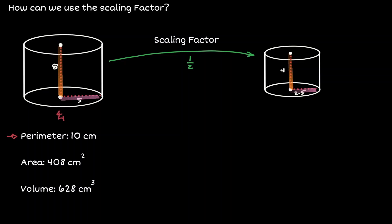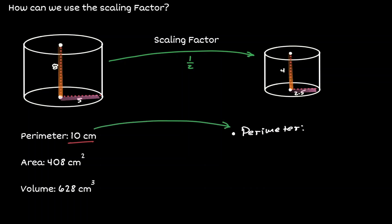Let's say we know that the perimeter of the cylinder on the left has a value of 10 centimeters. Just knowing the scale factor, can we find the perimeter of the cylinder on the right? We can — if we take the perimeter on the left and multiply by the scale factor of 1 half, that gives us the perimeter of the similar figure. So 10 times 1 half gives us 5 centimeters. If two figures are similar with a known scale factor, we can obtain the perimeter of one figure, multiply by the scale factor, and get the perimeter of the second figure.